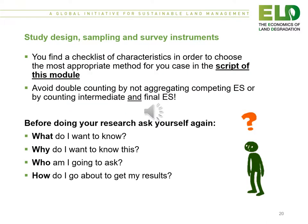Some pointers on study design, sampling and survey instruments can be found in the script of this module. It is important to avoid double accounting by not aggregating competing ecosystem services or by counting intermediate and final ecosystem services. So before doing your research, ask yourself: what do I want to know? Why do I want to know this? Who am I going to ask? And how do I go about getting my results?